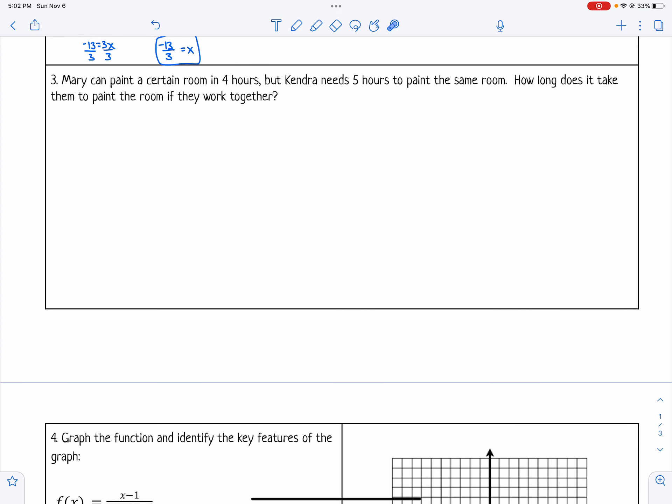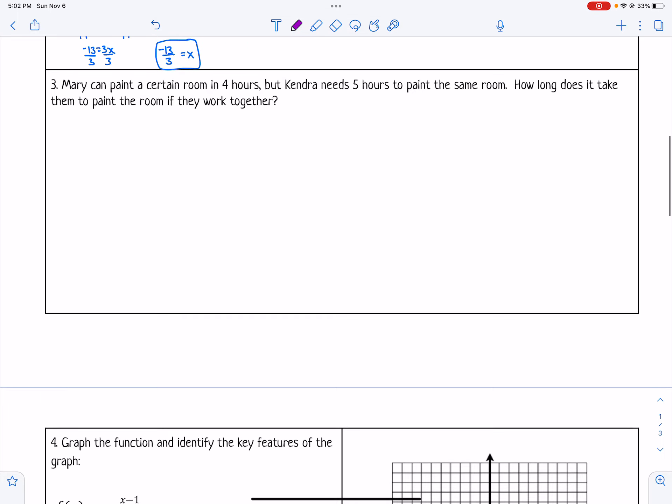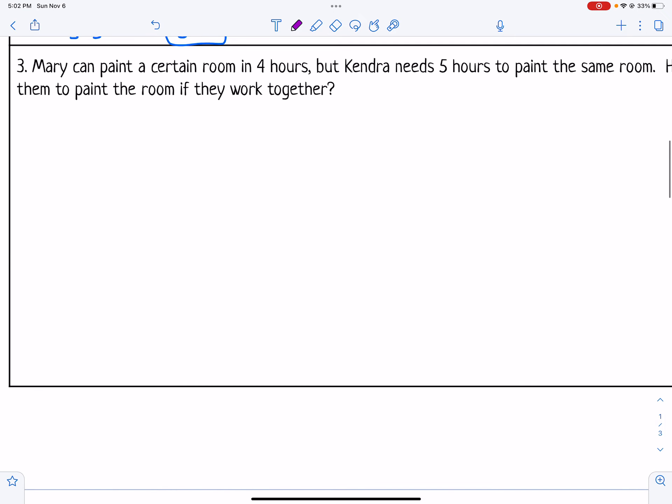For number 3, it says Mary can paint a certain room in 4 hours. But Kendra needs 5 hours to paint the same room. How long does it take them to paint the room if they work together? So let's say Mary can paint 1 room in 4 hours. Kendra needs 5 hours to paint 1 room. So we put 1 over 5. And we're looking for how long it takes them to work together. So that would be 1 room in x amount of time.